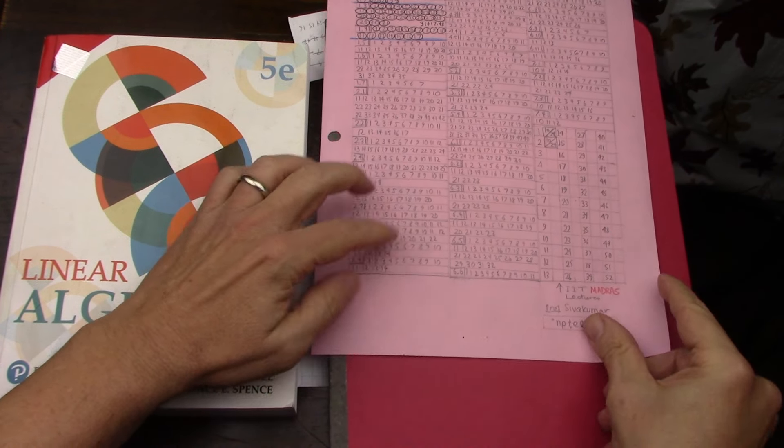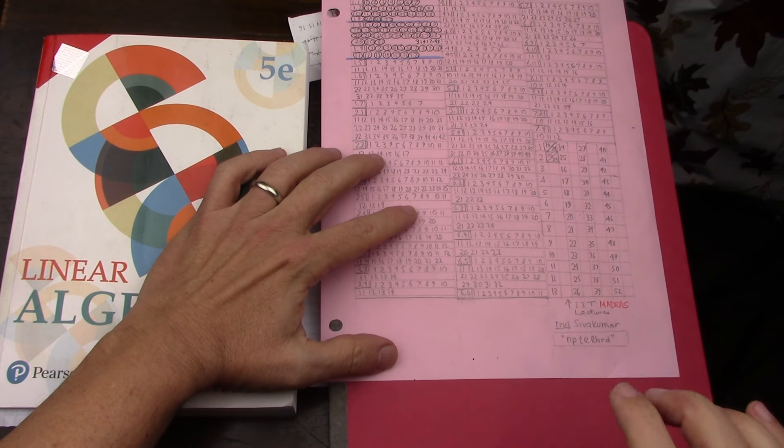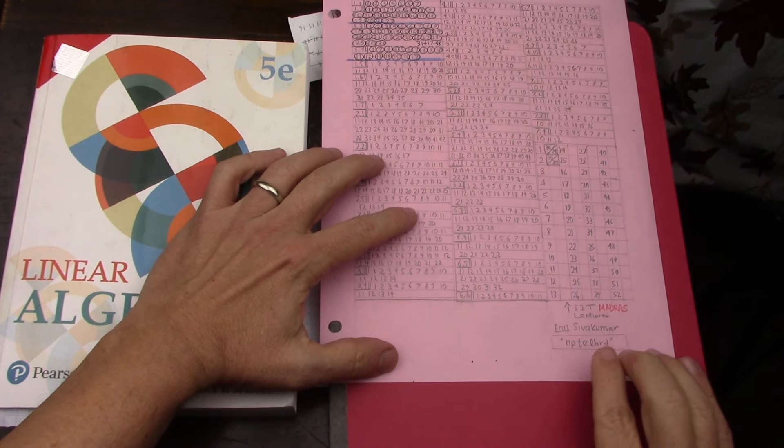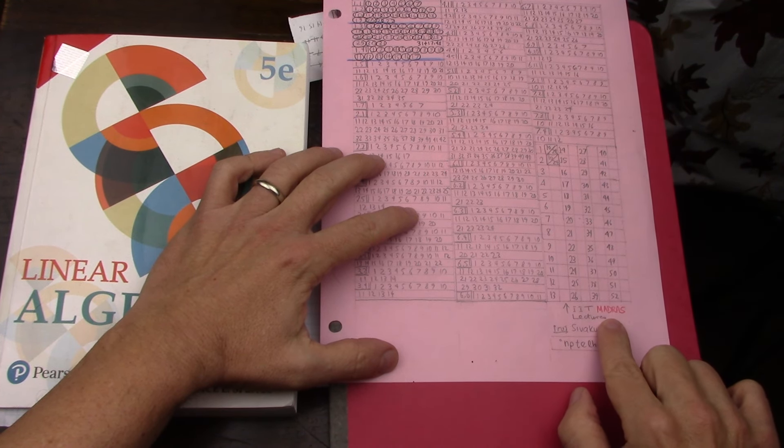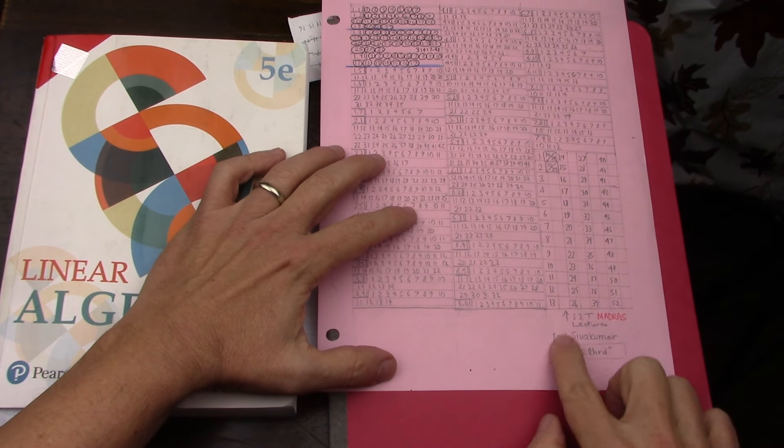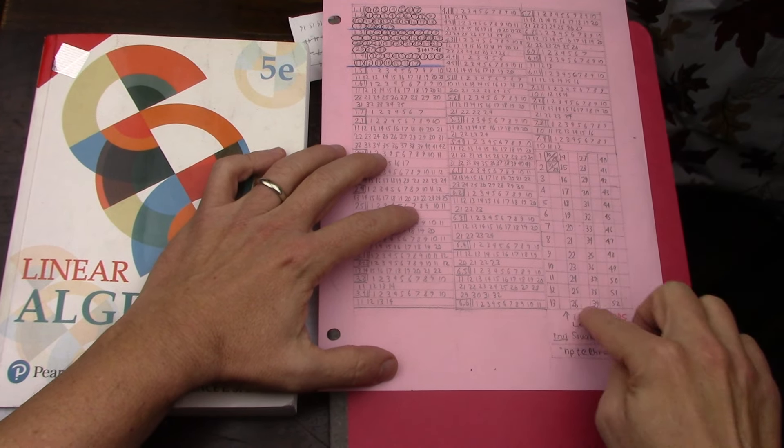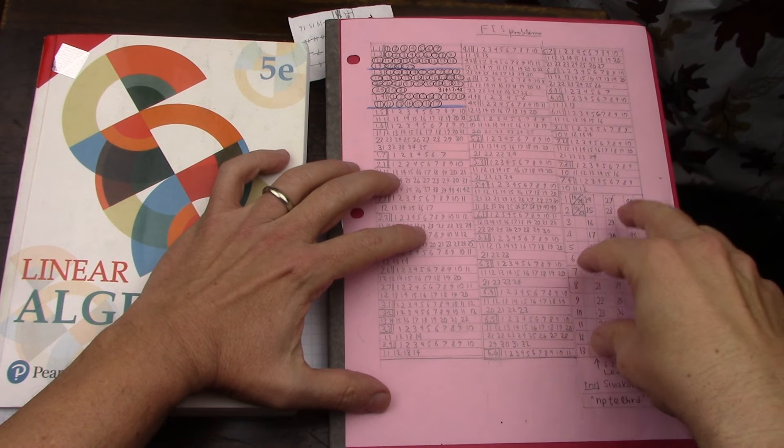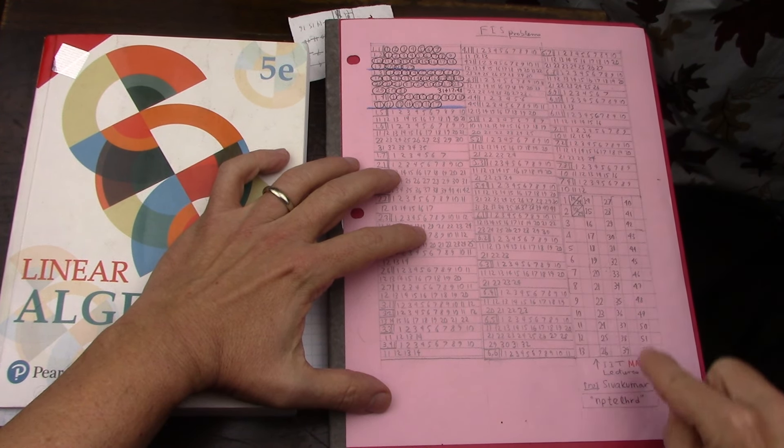Someone mentioned some lectures for a linear algebra course, and it's Professor Sivakumar at IIT Madras, so Indian Institute of Technology. I started watching them. I drew on the page here the 52 lectures. I'm going to go very slow because I want to cover a lot of content, and this is hours and hours of watching, but I really enjoyed the first two that I watched.